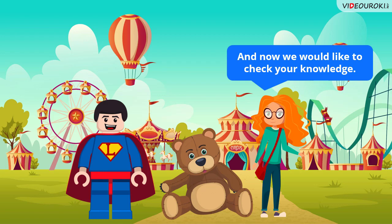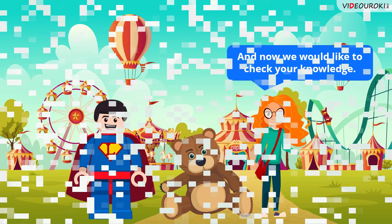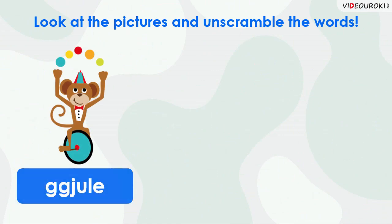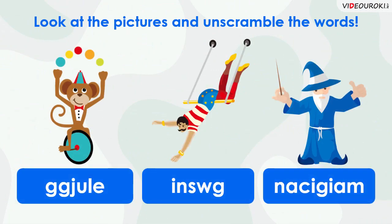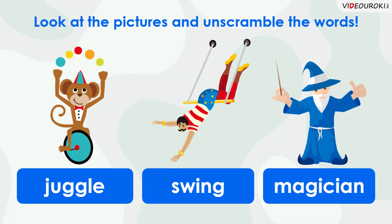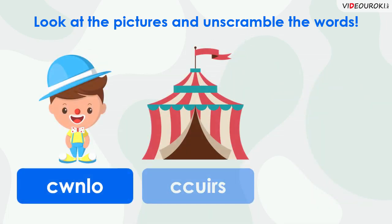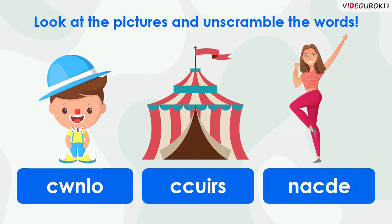And now we would like to check your knowledge. Look at the pictures and unscramble the words — посмотрите на картинки и расшифруйте слова. Let's check. The right answers are: juggle, swing, and magician. Now look at the following pictures. The right answers are: clown, circus, and dance.